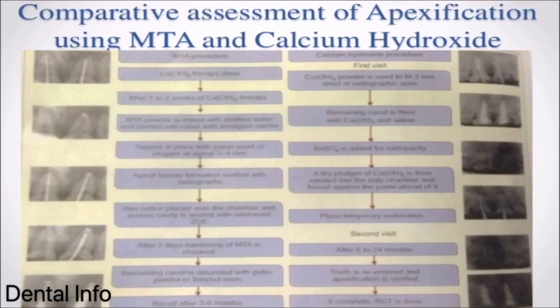Comparative assessment of apexification using MTA versus calcium hydroxide. MTA procedure: Calcium hydroxide therapy is done first. After 1 or 2 weeks, MTA powder is mixed with distilled water and carried into the canal with an amalgam carrier. Tapped in place with paper point or plugger at the apical 3–4 mm. Apical barrier formation verified with radiograph. Wet cotton placed over chamber and access cavity sealed with reinforced ZOE. After 2 days, hardening of MTA is checked. Remaining canal is obturated with gutta-percha or bonded resin.